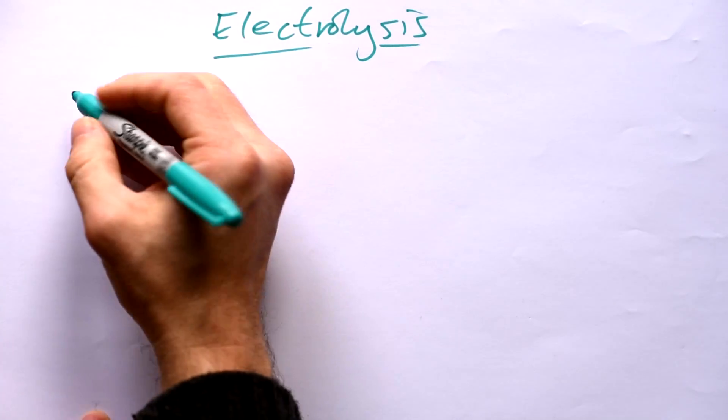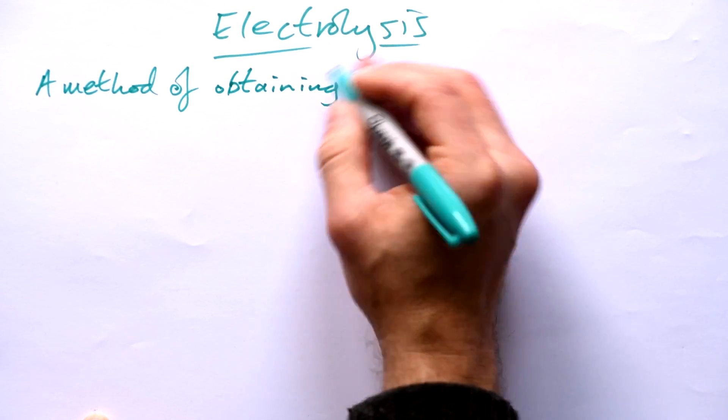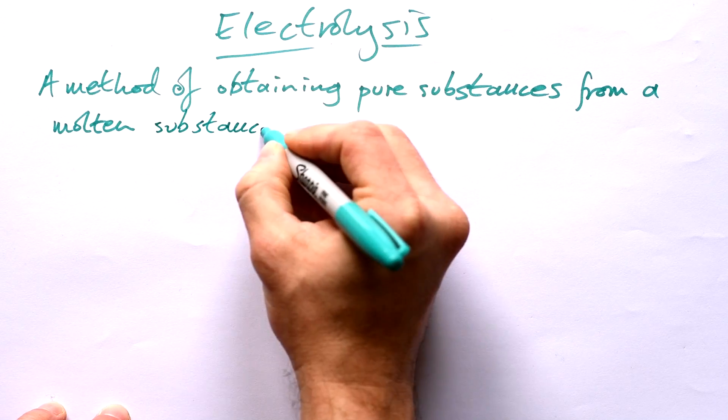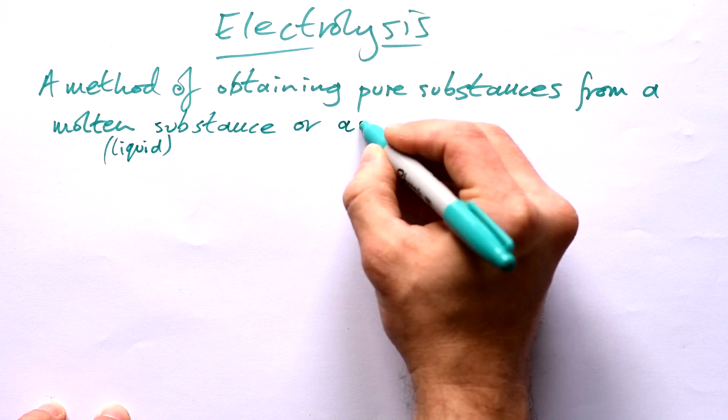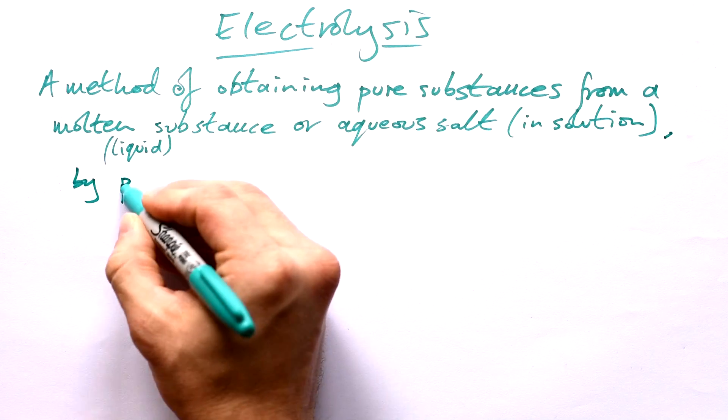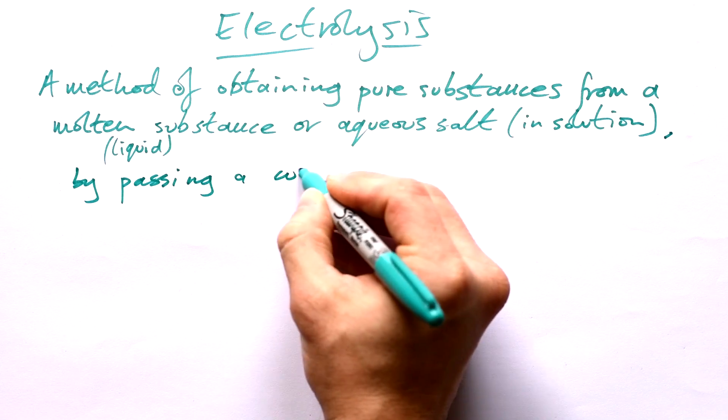Okay, electrolysis. What is it? What is it used for? Well, it's a way of obtaining pure substances from a molten substance, that is it's melted, it's liquid, or aqueous salt. It's just in solution. It's dissolved by passing a current through it.